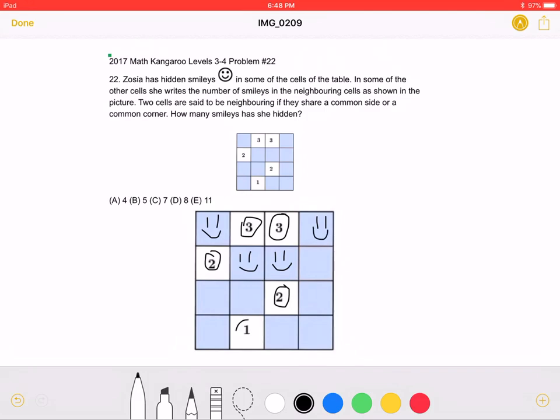Now, finally, we have this 1. We must put the smiley face over here in order to not change the original number of smileys for any of the other blocks.